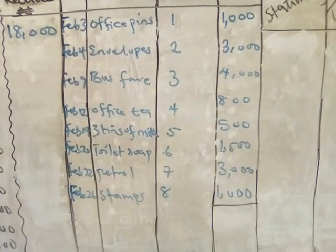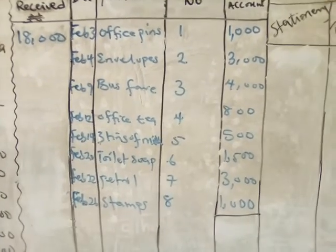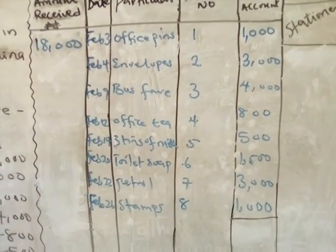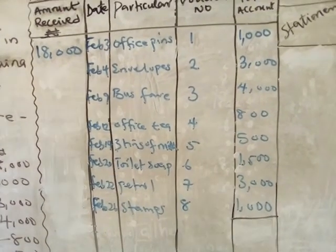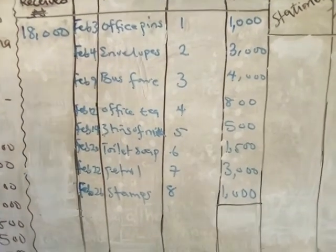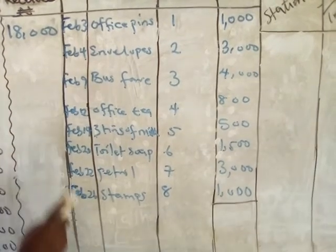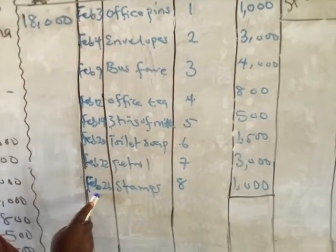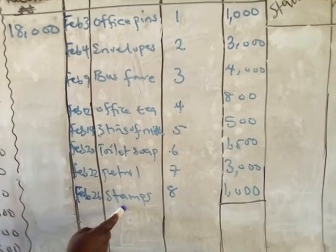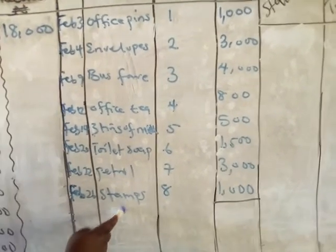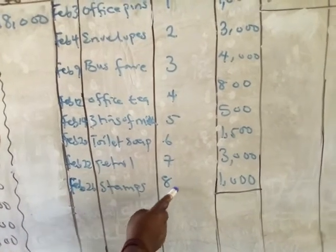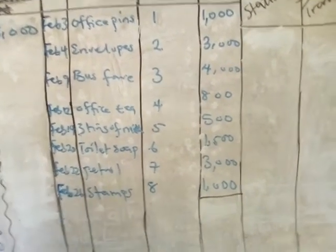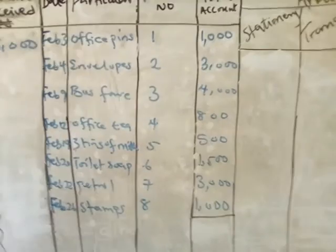The last transaction was carried out on the 26th of February — she paid for a stamp, which is $1,000. That is the last transaction in the month of February. The date is February 26th, the item is stamp, voucher number 8, and the amount is $1,000.